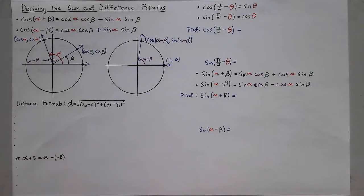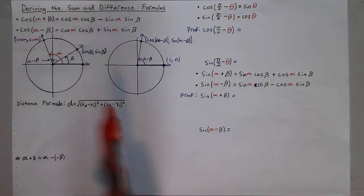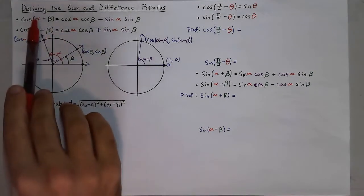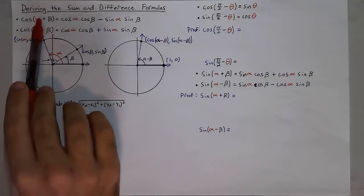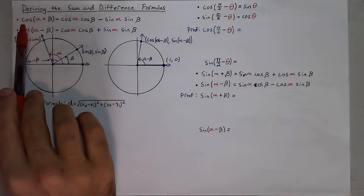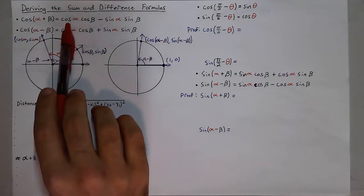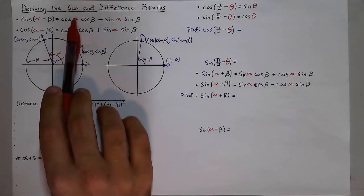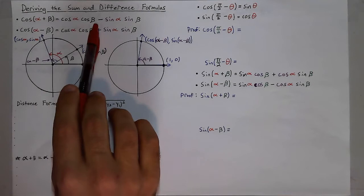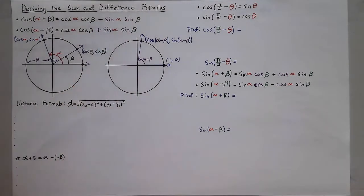In this video we are going to learn how to derive the sum and difference formulas. The sum and difference formulas describe how, when you have the sum or the difference of two angles within a trig function, you can rewrite them as trig functions of each of those angles by themselves and some sort of sum and product of them.